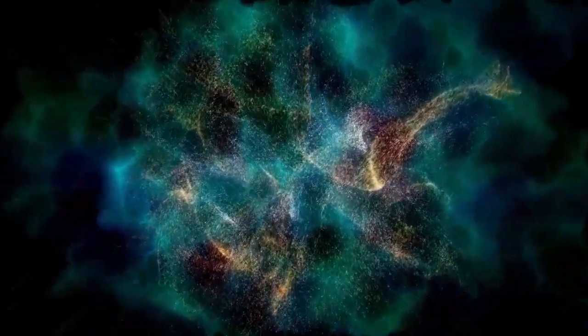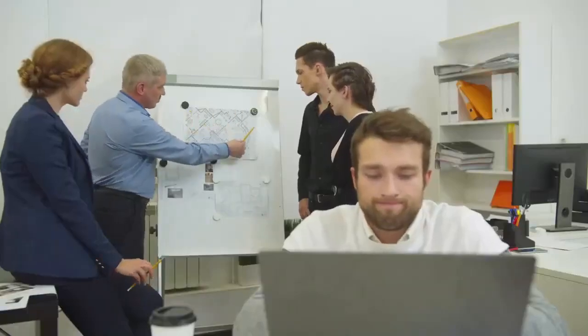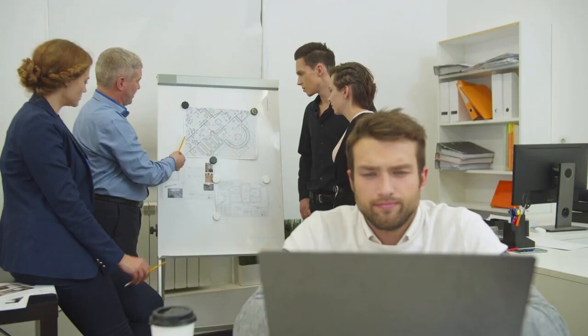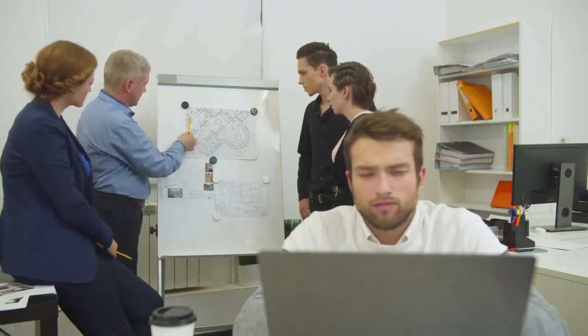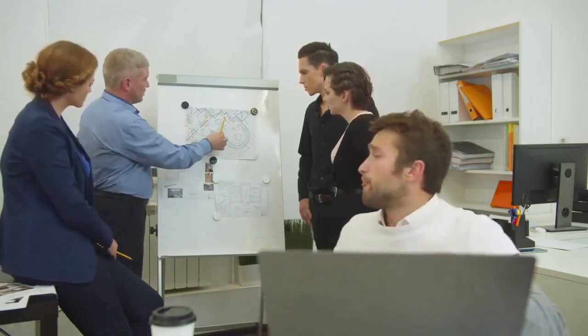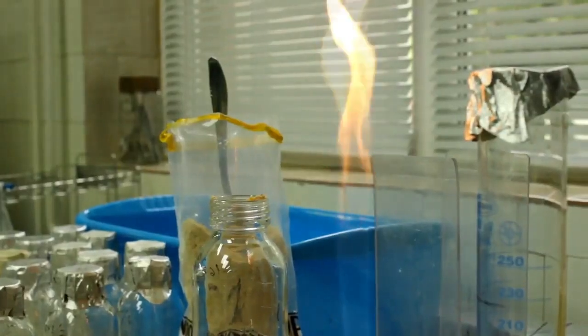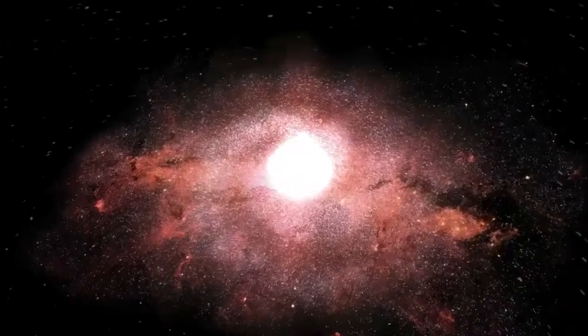My understanding is that nothing comes from nothing. For something to exist, there must be material or a component available. For those materials to be available, something else must exist first. Where did the material come from that created the Big Bang? What happened in the first instance to create that material?